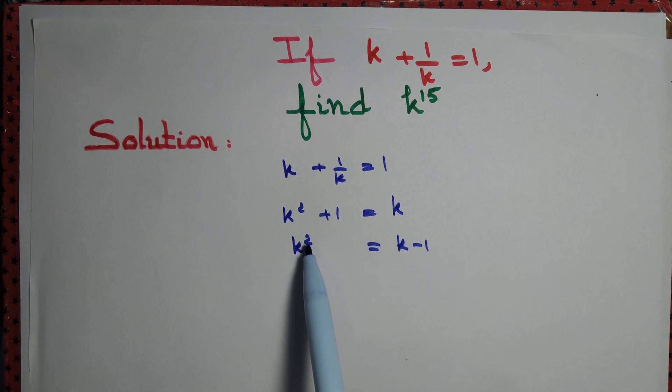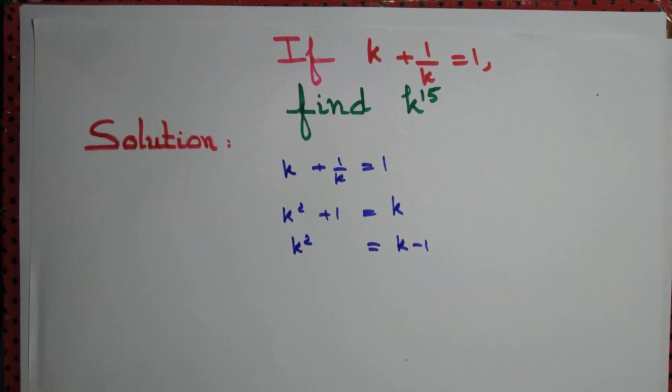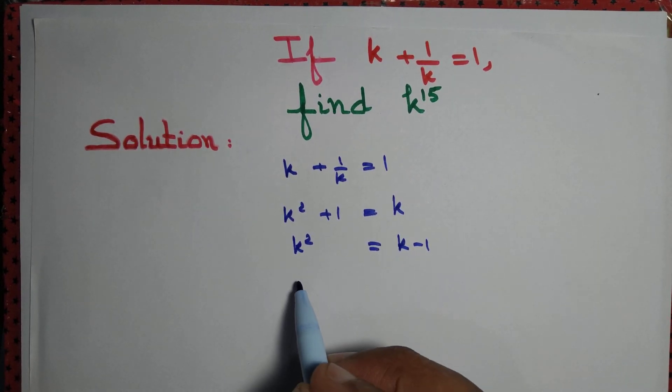You see that you are able to reduce the power by 1, from 2 to 1. But you want k to the power 15. So let's raise it to the power 2 once again.